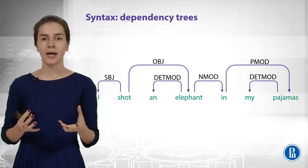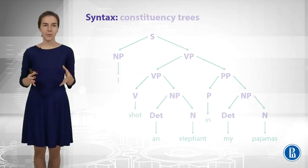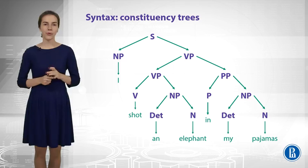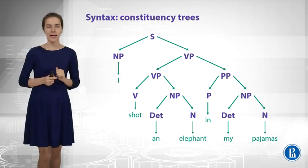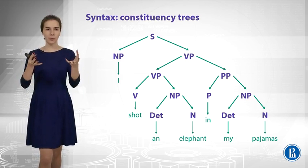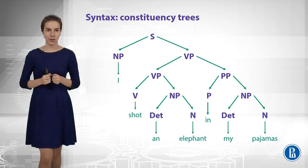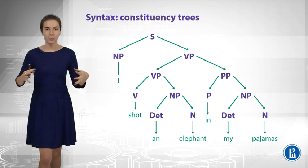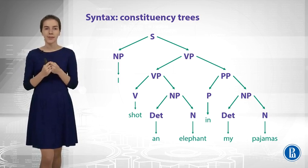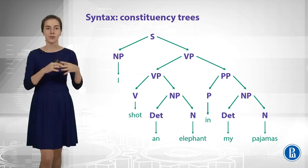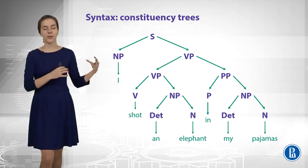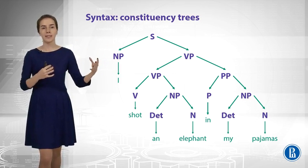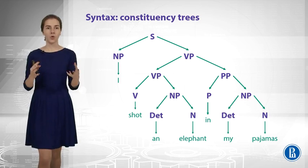Another way to represent syntax would be so-called constituency trees. You can see the same sentence at the bottom of the slide, and then you parse it from bottom to top to get this hierarchical structure. You know that 'an' and 'elephant' are determiner and noun respectively, and you merge them to get a noun phrase. After that, you merge it with a verb, which is 'shot,' and get a verb phrase. You merge it with another subtree and get a bigger verb phrase, and finally this verb phrase plus noun phrase 'I' gives you the whole sentence.